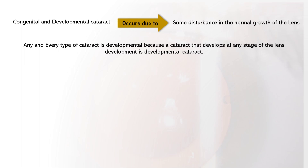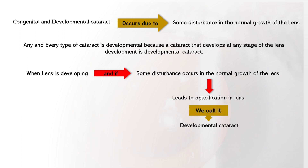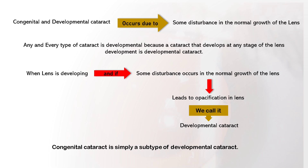When the lens is developing and some disturbance occurs in the normal growth of the lens leading to opacification, we call it developmental cataract. Because this disturbance occurs at a certain point in time, it affects the particular zone being formed when the process is disturbed, and the fibers surrounding that zone are often normally formed and remain clear. Congenital cataract is simply a subtype of developmental cataract.